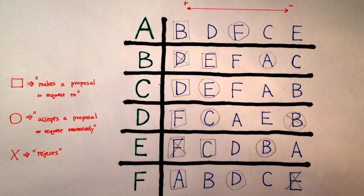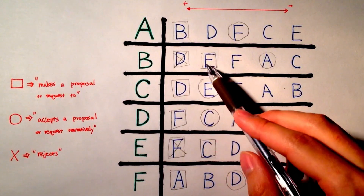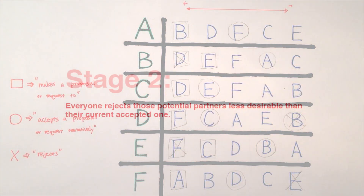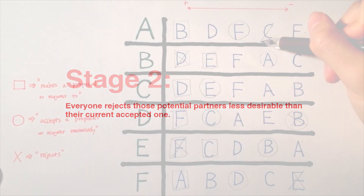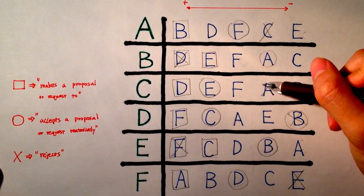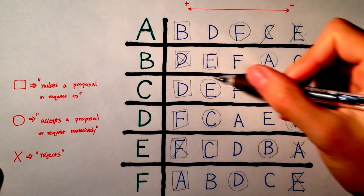Stage 1 has finished, as everybody holds a successful proposal. In every row, you can also find a square and a circle that are not crossed out. Now stage 2: everyone simply rejects choices that are less desirable than their current accepted choice. It is as simple as crossing out letters on the right-hand side of the circle in each row, and it has to be done symmetrically.